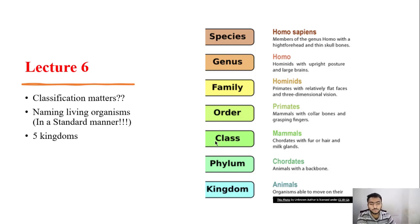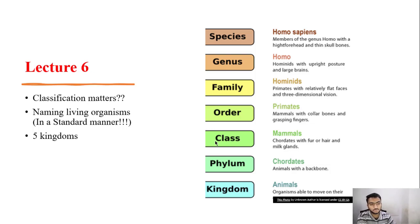Today we are going to take a look at the five kingdoms. Furthermore, we will be discussing the two broad groups of living organisms: vertebrates and invertebrates, including arthropods. All of this relates to what you can see on your screen right now on the right side.